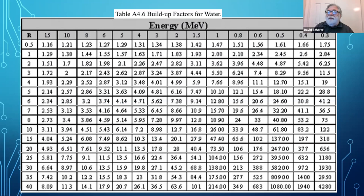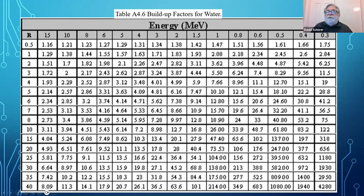Here's another example of a buildup factor table, this one for water. Photon energies are across the top and relaxation lengths (μx) are on the left. You can see that for 1 MeV photons with a thick material — 30 relaxation lengths — if you didn't use the buildup factor you would underestimate the dose by a factor of 100. That could be very significant.